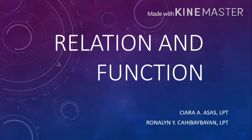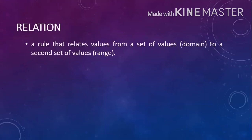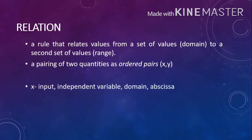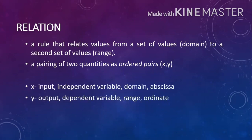Relation is defined as a rule that relates values from a set of values called the domain, to a second set of values called the range. It is also defined as a pairing of two quantities as ordered pairs x and y, where x could also be referred to as input, independent variable, domain, or abscissa, and y could also be referred to as output, dependent variable, range, or ordinate.